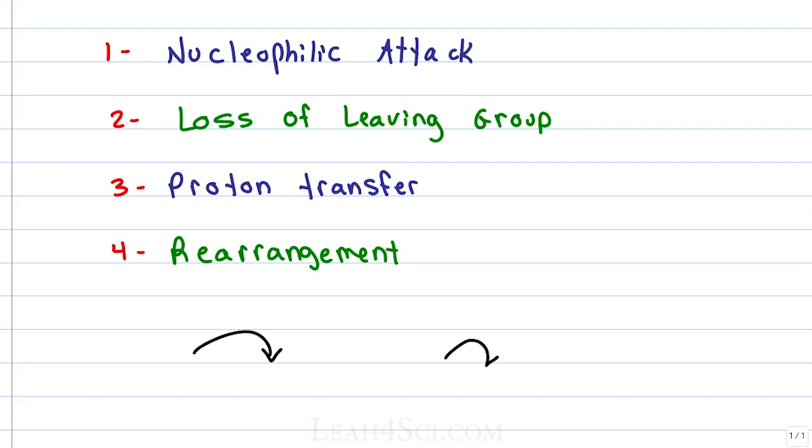I like to think of each arrowhead telling me how many electrons are moving. With a double-headed arrow, we have a pair of electrons and this is the case for over 90% of the mechanisms you'll see in organic chemistry. The single-headed arrow or the fish hook is a lone electron and you'll only see this when you're looking at radical reactions.